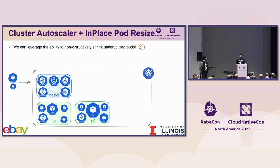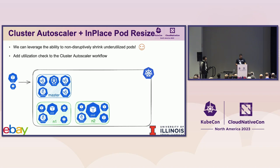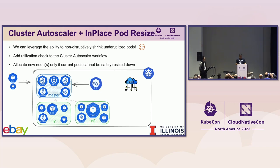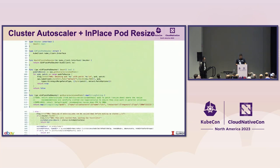Now let's look at what we can do differently with in-place pod resize. We now have the ability to quickly resize a pod without disruption, so pod disruption budgets are not an issue. We make a small tweak to the cluster autoscaler logic: instead of immediately requesting a new node from the cloud provider, we first check if current pods can be resized down. If we can create enough room that way, we schedule the pod without firing up new nodes, saving money and becoming more sustainable. This is what I call a 'pod smusher' — we shrink underutilized pods before scaling up the cluster.